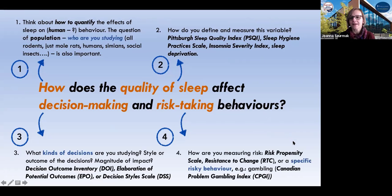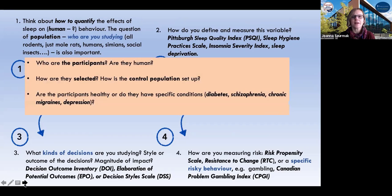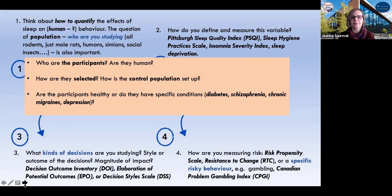Since we're mainly looking at a quantitative kind of study, there is the measurement of risk. There are many scales we could use for general kinds of risk behaviors, or there are specific kinds of risk behaviors such as gambling — and there are actually very exciting scales for that. Having looked at all of these things, we can also make a note of the participants and the selection mechanism of the participants. Are we going to have a control population? Do we select the participants or are they self-selected? And are the participants healthy, or do they have conditions that might affect sleep quality?